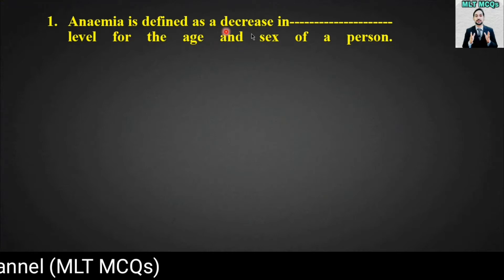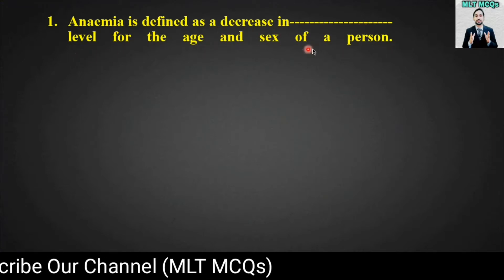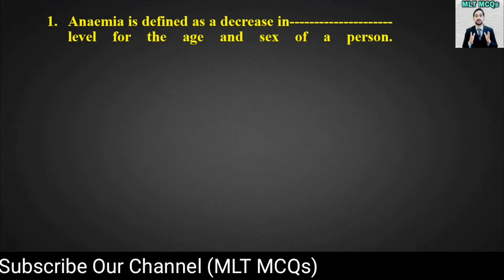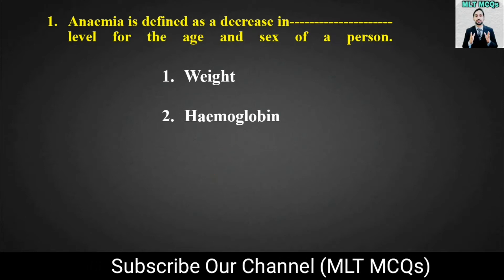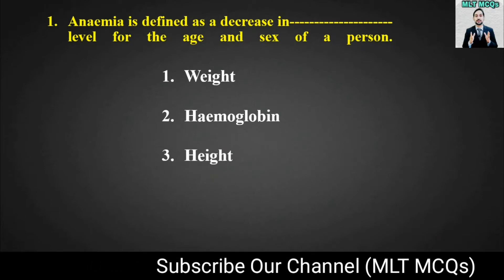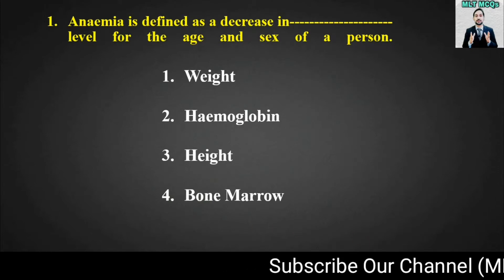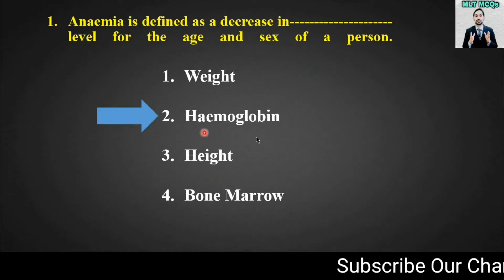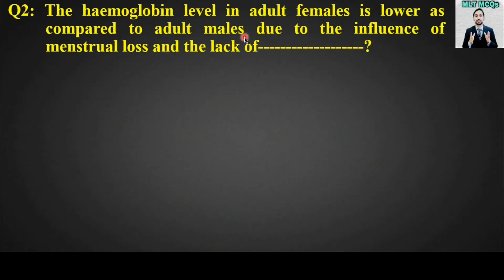MCQ number one: Anemia is defined as decrease in blank level for the age and sex of a person. Options are: weight, hemoglobin, height, or bone marrow. The right answer is option number two — hemoglobin. Anemia is defined as decrease in hemoglobin level for the age and sex of a person.